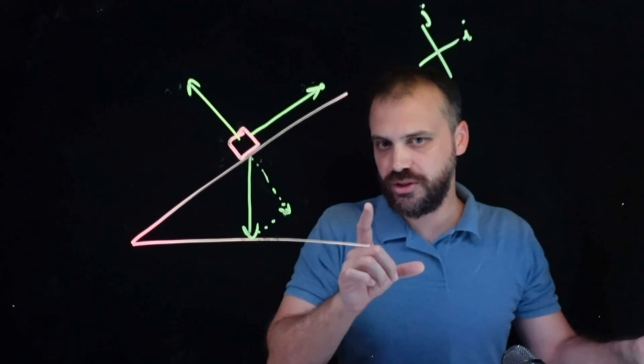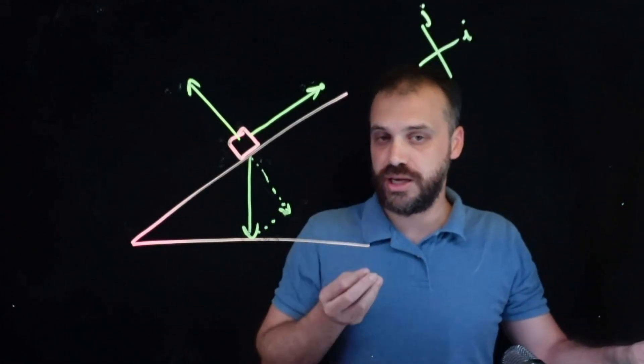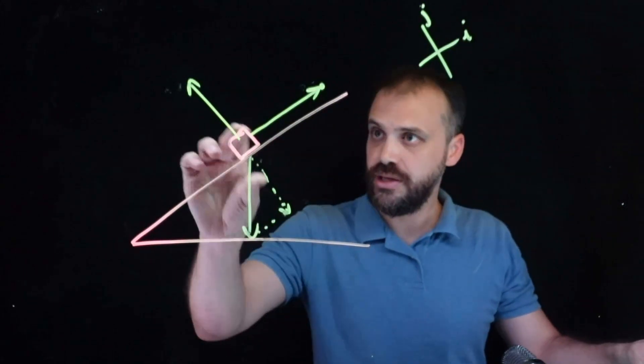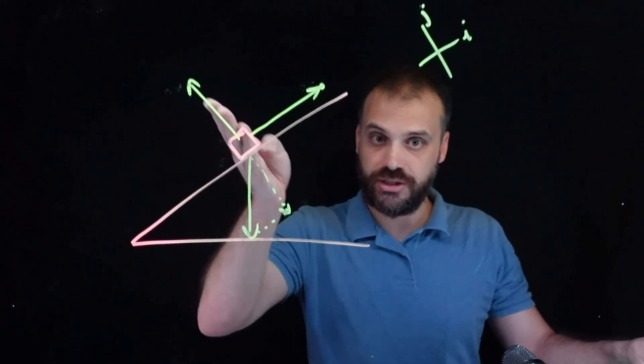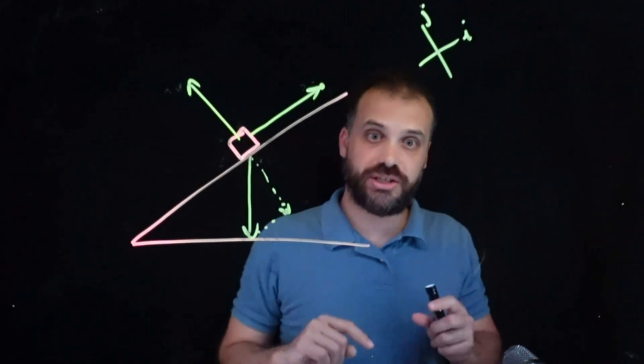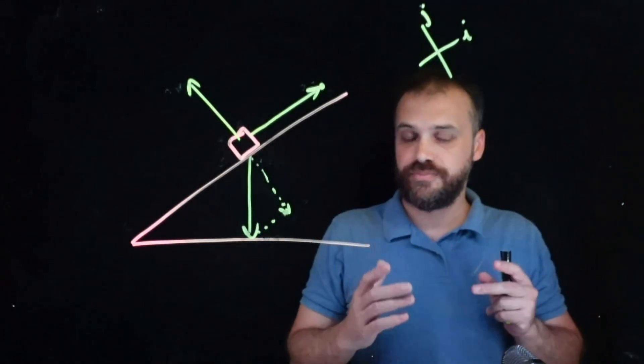What we do know for a fact, though, is that there are three forces acting on this object. This force, mass, gravity. This force, the normal contact force, and the tension in the string. And the object is not going anywhere.